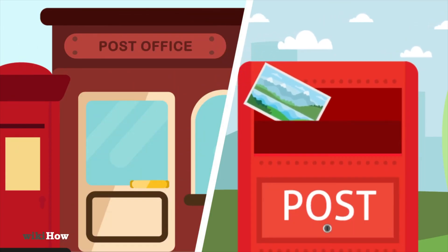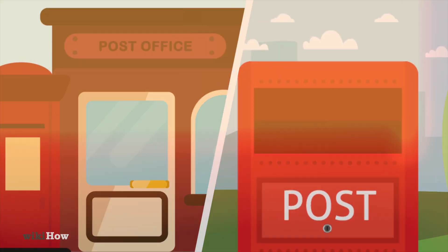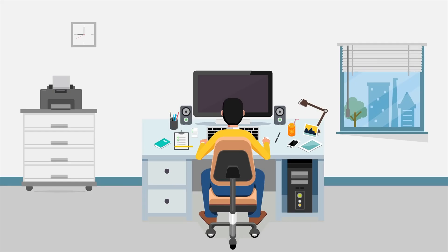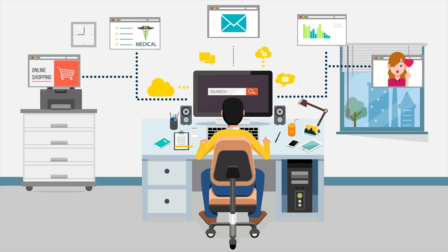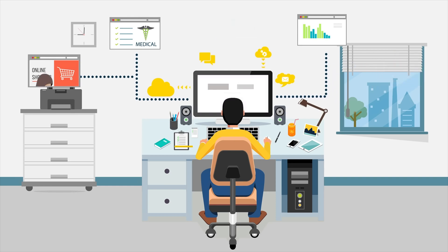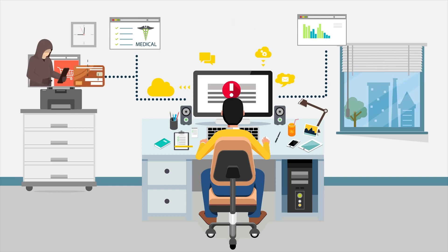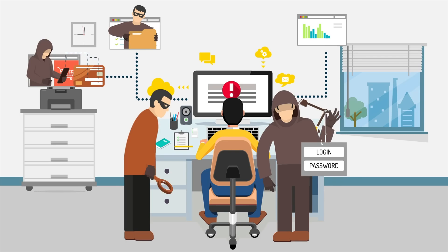Think of it like this: imagine you're sending postcards through the mail. Normally, anyone who handles the postcard can read what's written on it. But if you put that postcard inside a locked box before sending it, no one can see what's inside except the person who has the key. That's what a VPN does for your internet traffic. When you connect to the internet, your data travels through different networks before reaching its destination. Without a VPN, anyone on the same network, your internet service provider, or a hacker on public Wi-Fi can see what you're doing.